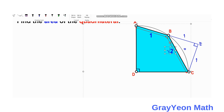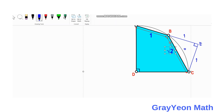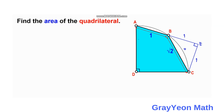Next, we divide this quadrilateral into two parts by drawing a line from point A to point C, dividing it into two triangles: triangle ABC and triangle ACD.